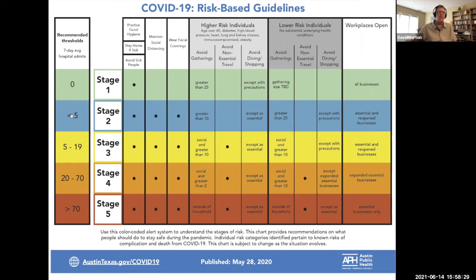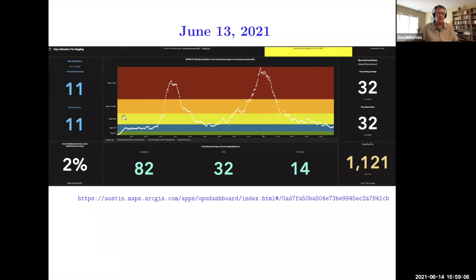We built these thresholds that said if you're 5% or under, you could be in blue, between 5% and 20% in yellow. If you have more than 70 COVID admissions to the hospital per day, then you need to be in the strictest red lockdown. This is a screenshot from yesterday of a public-facing dashboard in Austin that has exactly that flag. This is a plot of seven-day average of admissions to the hospital starting in March 2020 and running through now. You can see that the current seven-day moving average of hospital admissions for COVID is 11 patients.